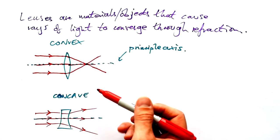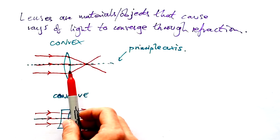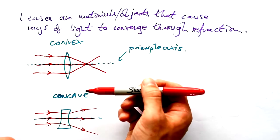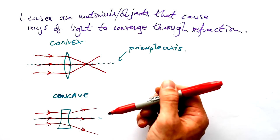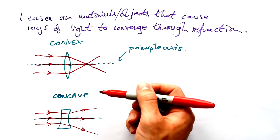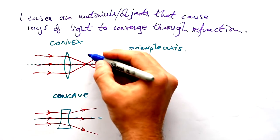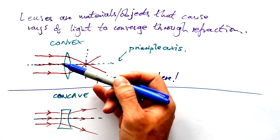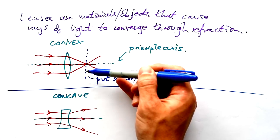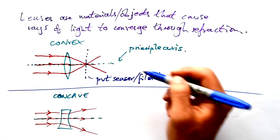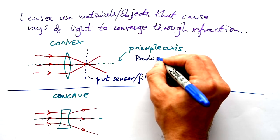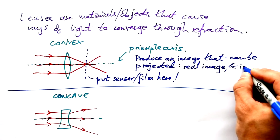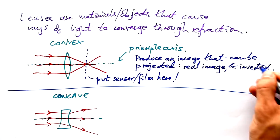Let's look at the convex lens first. Light rays entering parallel into the lens are all meeting at this point here. If this lens were in a camera, you'd want to put your film or sensor where the light rays meet. That means if the light is coming from the Sun, we can form an image of the Sun here because all the light rays are meeting. Convex lenses produce an image that can be projected — we say it's a real image. It's also inverted — it ends up upside down, and we'll talk about why that is later.